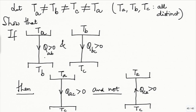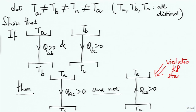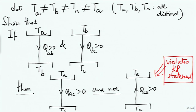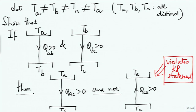Because if you assume this and this, then this would show that this violates the Kelvin-Planck statement. This is what you have to show, just the way we have done earlier. The importance of this is that you can have the equivalence, extending this by replacing heat interactions with 2T engine interactions.